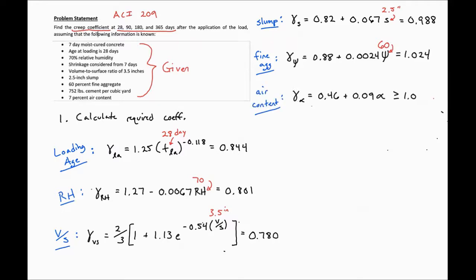Finally, we have our air content factor. In our case, we have 7% air. So we'll plug in our 7%, and we see that we need to be greater than 1.0. Our factor equals 1.09 with 7% air, so we're greater than 1.0, so we're okay.